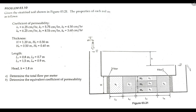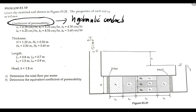The stratified soil has these properties. The coefficient of permeability — also called hydraulic conductivity — is: K1=6.25 cm/hr, K2=5.75 cm/hr, K3=4.5 cm/hr, K4=6.25 cm/hr. The total head difference delta H is 1.8 m. We are looking for the total flow per meter and the equivalent coefficient of permeability.